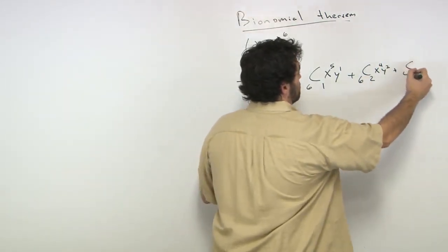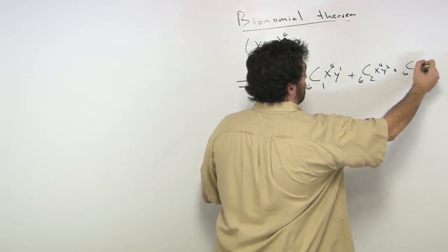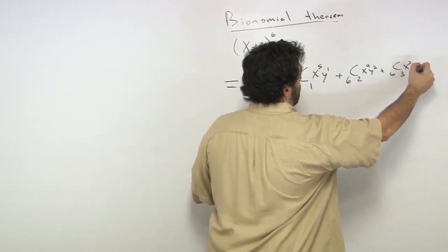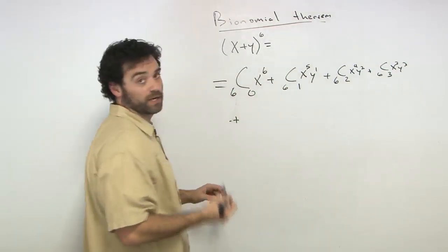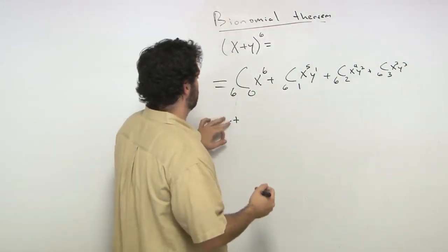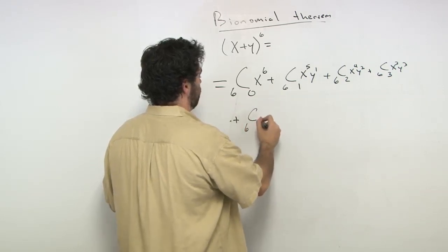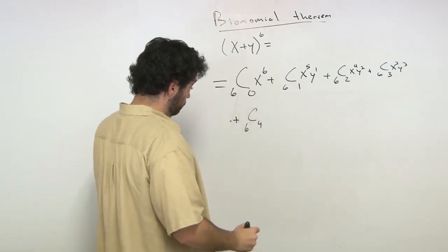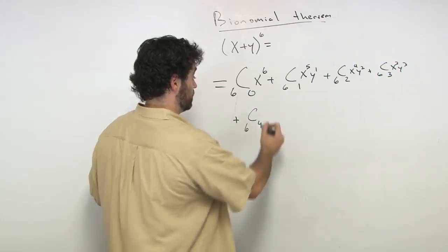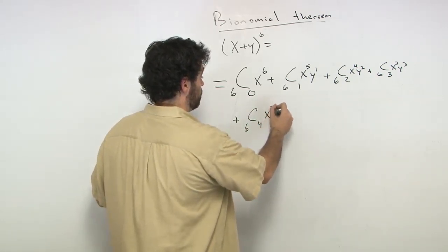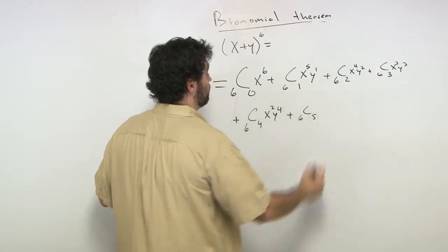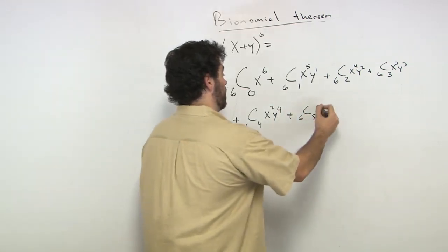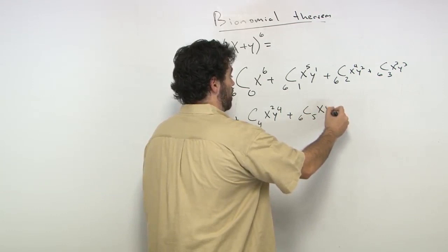We have 6c3, x3, y3, plus. You see this is not easy, I'm also writing big. Plus, now we do 6c4, and that's going to give us x2, y4, plus 6c5, that gives us x and y5.